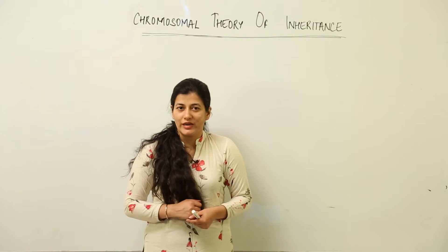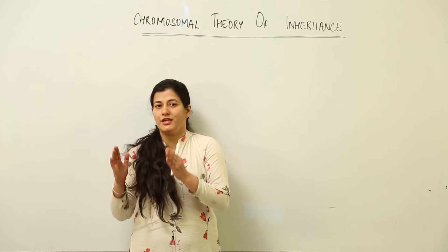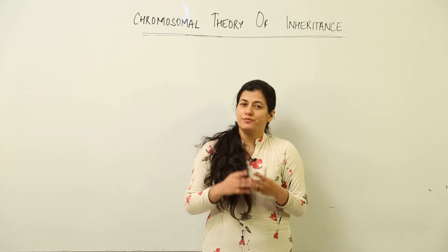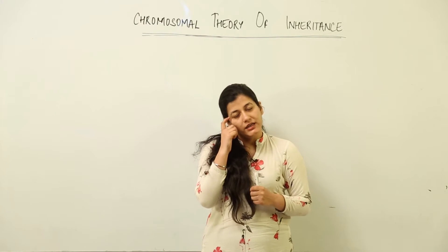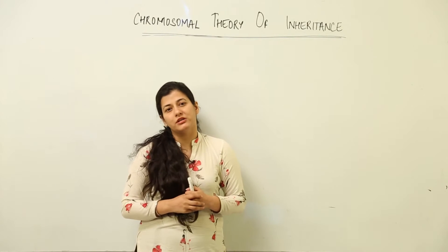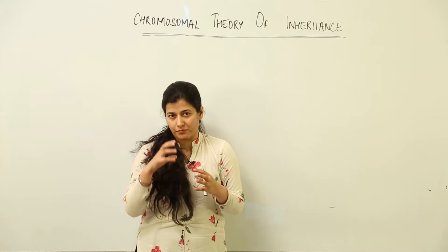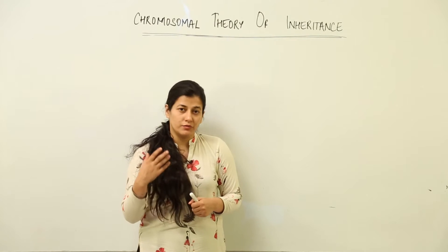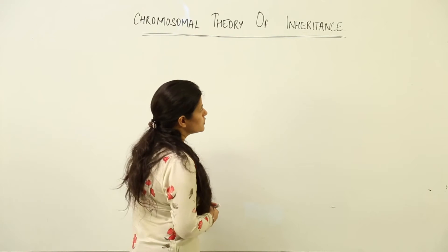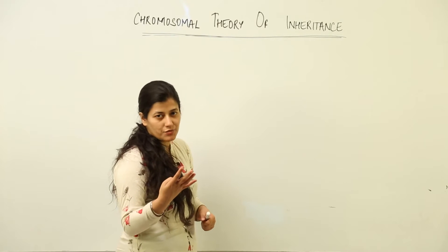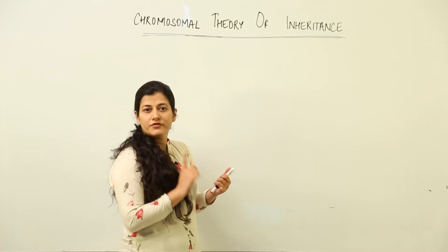In this lesson we are going to talk about the chromosomal theory of inheritance. We had talked about Mendelian aspects of inheritance, discussing the laws proposed by Mendel. There were three main Mendelian laws: the law of dominance, the law of segregation, and the law of independent assortment.